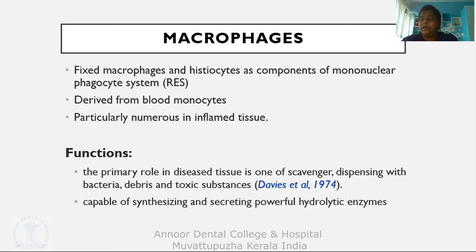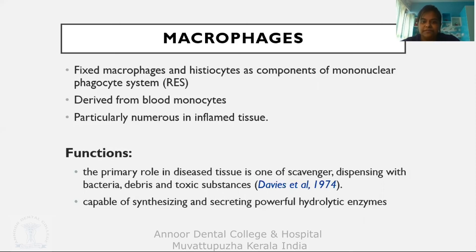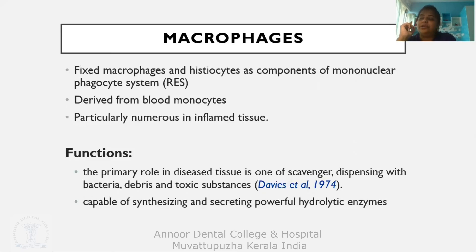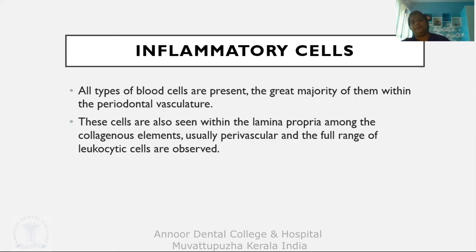Macrophages (fixed macrophages and histiocytes) are components of the mononuclear phagocyte system (RES). They derive from blood monocytes and are particularly numerous in inflamed tissue. Their primary role is scavenging — removing bacteria, debris, and toxic substances. They are also capable of synthesizing and secreting powerful hydrolytic enzymes.